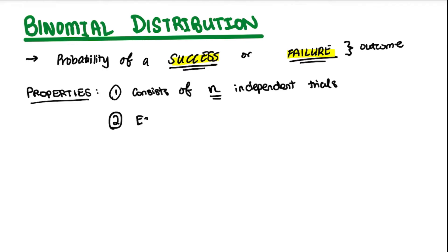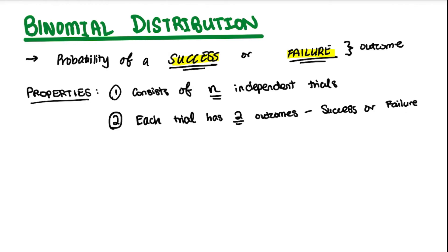The second property is that each trial has two outcomes — whether it's going to be a success or a failure. For example, if I take out a ball from a bag of balls, will I get a red color ball? That only has two outcomes: success — yes, I take out the red ball, or failure — I take out a blue ball. Each draw is independent and only has these two outcomes.